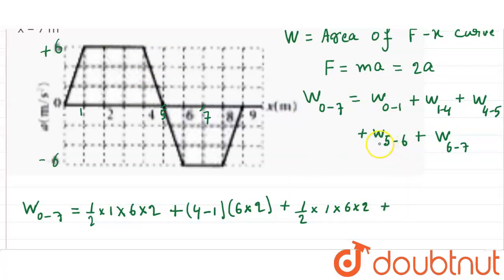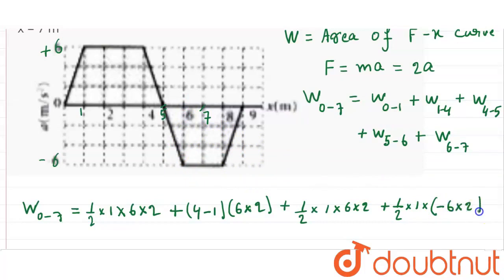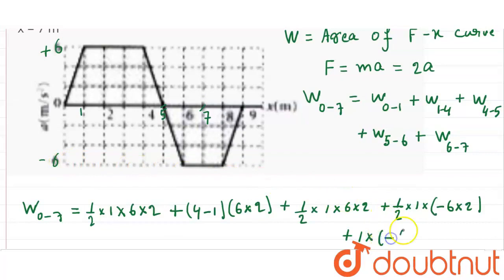Plus work done from 5 to 6: triangle = half × (6−5) × (−6×2) = −6, because the acceleration is negative here. Work done from 6 to 7: rectangle = (7−6) × (−6×2) = 1 × (−12) = −12.